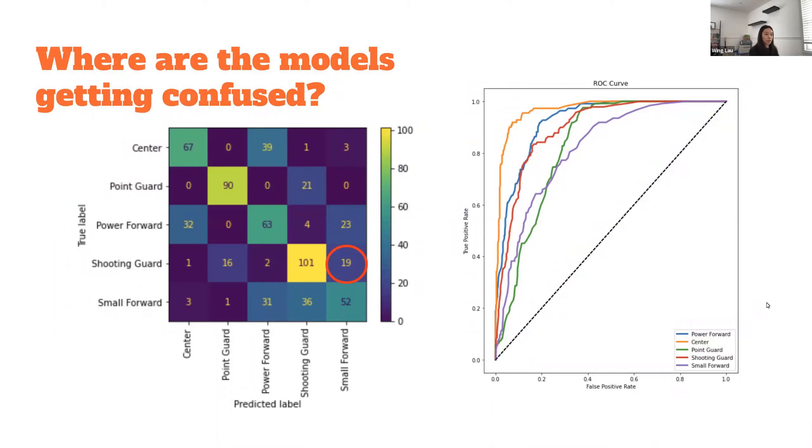Looking at the ROC curve, the purple line is the small forward. Just intuitively, we can understand why it might be doing the poorest, given that small forwards tend to be the most versatile player on the team.